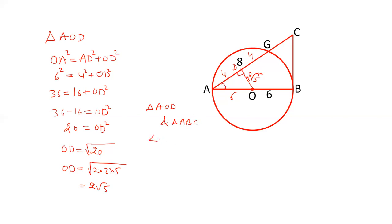angle A is common—this angle is there in both triangles. Angle D equals angle B. Now why is angle D equal to angle B? Angle D is 90° because OD is drawn perpendicular, and angle B is also 90° because tangent and radius are perpendicular to each other. Therefore, triangle AOD is similar to triangle ABC.